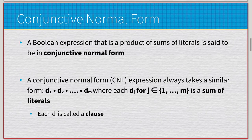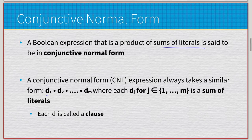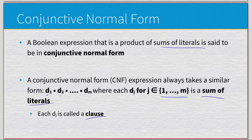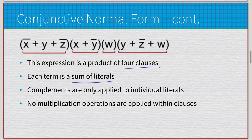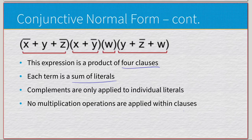The next form is conjunctive normal form, which is kind of the opposite of disjunctive normal form. Here we have products of sums of literals — D1 times D2 times D3 and so on — where each factor is called a clause. An example: (negated-x plus y plus negated-z) times (x plus negated-y) times w times (y plus negated-z plus w). Complements apply only to individual literals, and there is no multiplication within any clause.